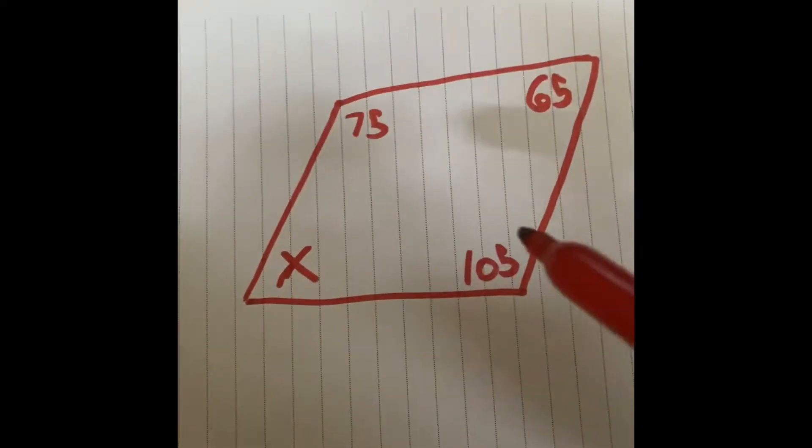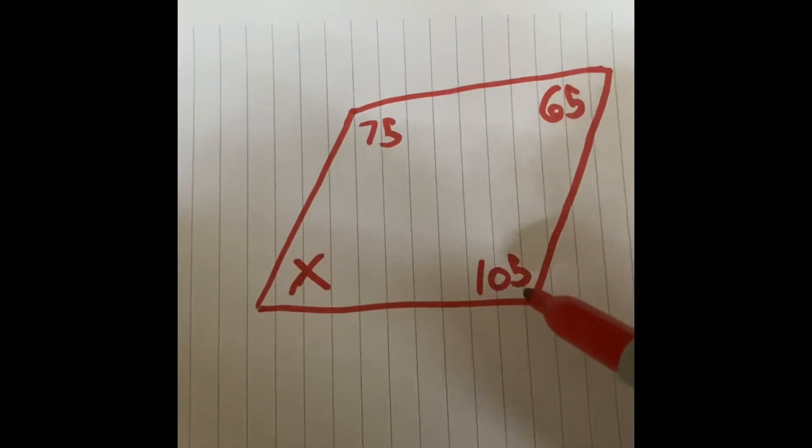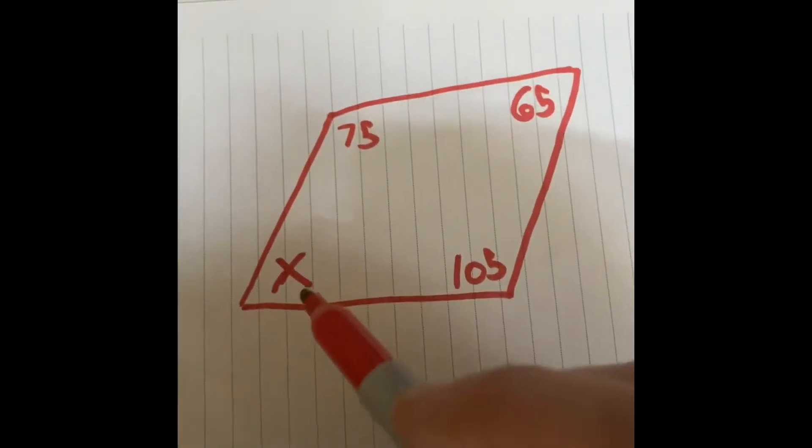So when you see a problem like this, you're going to need to add these three angles first and then take that away from 360 to find x.